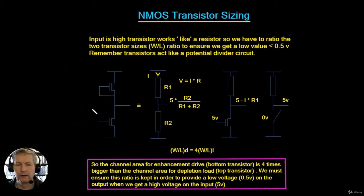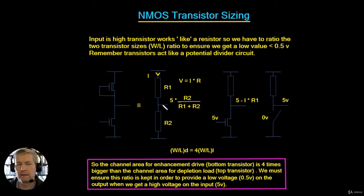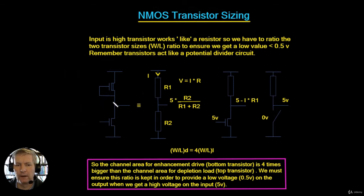We can think about this in terms of a potential divider - each of these will provide a resistance. We could say this is going to have resistance R1 and this will have resistance R2. It's not exactly like this but it gives a good indication of how we're going to work forward. In order to ensure that we get a low voltage at the output whenever we put a high voltage in, so 5 volts in, we want to make sure that we get a low voltage out.